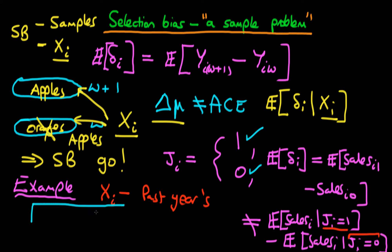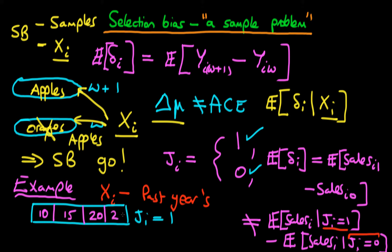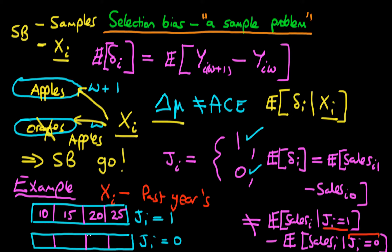The idea here is that we might take the group that did undertake on-the-job training — where Ji equals 1 — and split it into four different subgroups, each with a different average past year's level of sales: the first group with 10, the second with 15, the third with 20, and the last group with 25. And then if we could come up with subgroups within the untreated group — those with Ji equals 0 — which reflected exactly the same distribution as in the treated group, we might then be able to unpick some sort of average causal effect.